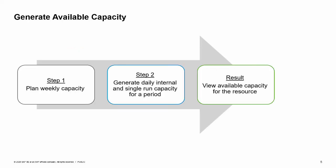To manage the capacity of a resource, you need to generate the available capacity. You do this in two steps. In Step 1, you define a weekly plan, where you set the expected capacity of the resource for each day of the week. In Step 2, you generate the capacity for a whole period, such as a quarter, by copying the weekly plan defined in Step 1 to the whole period.